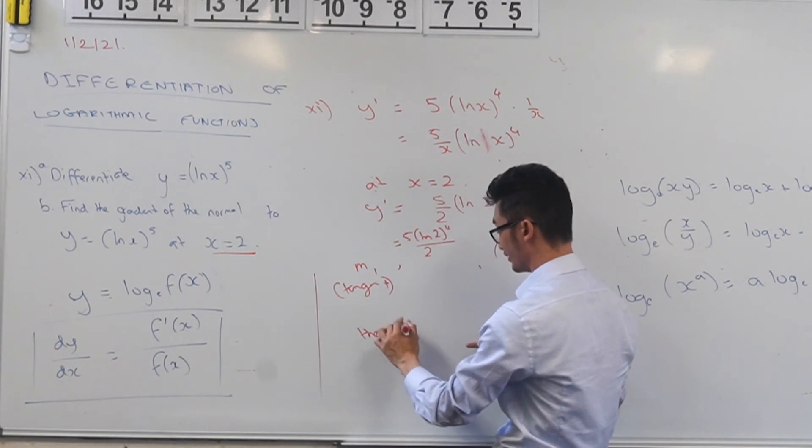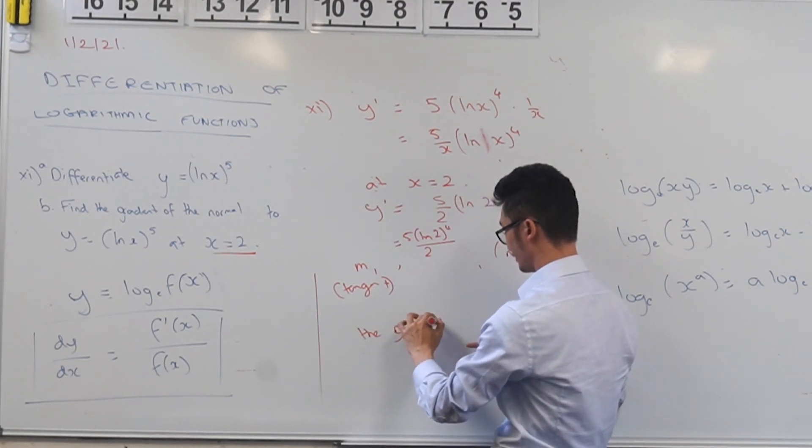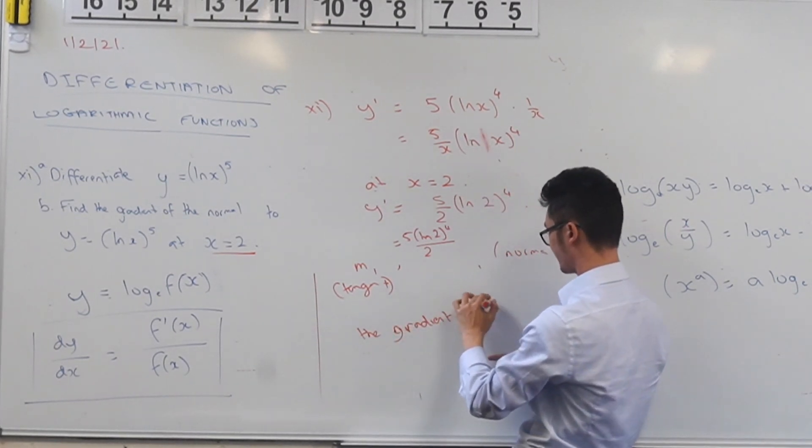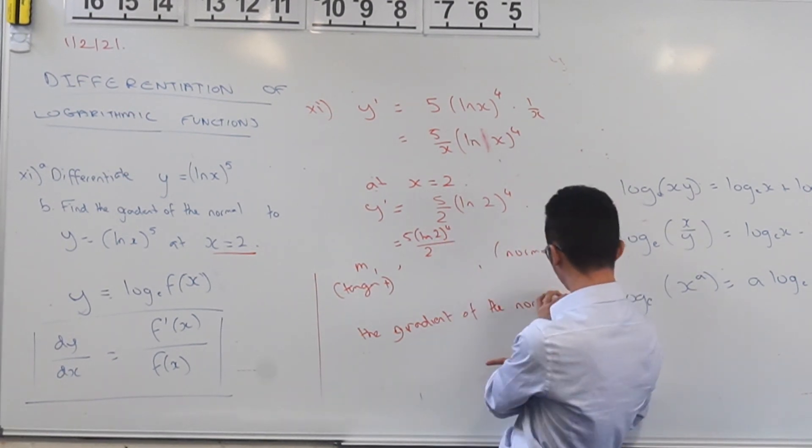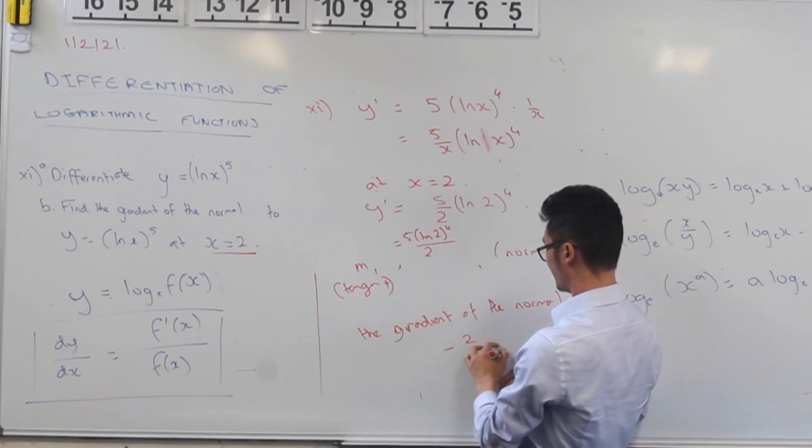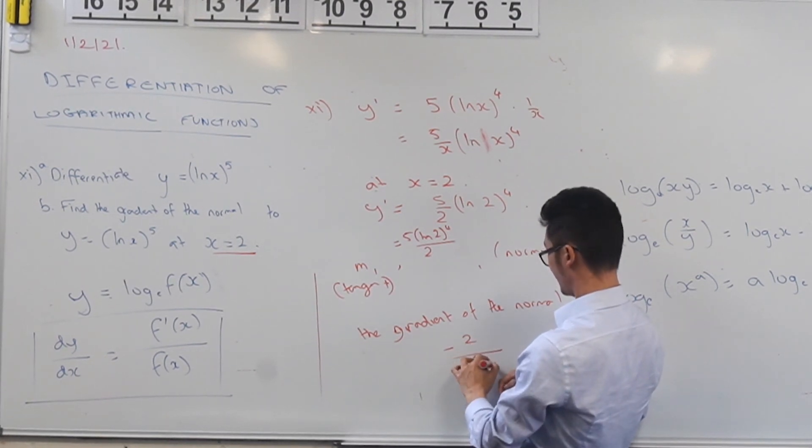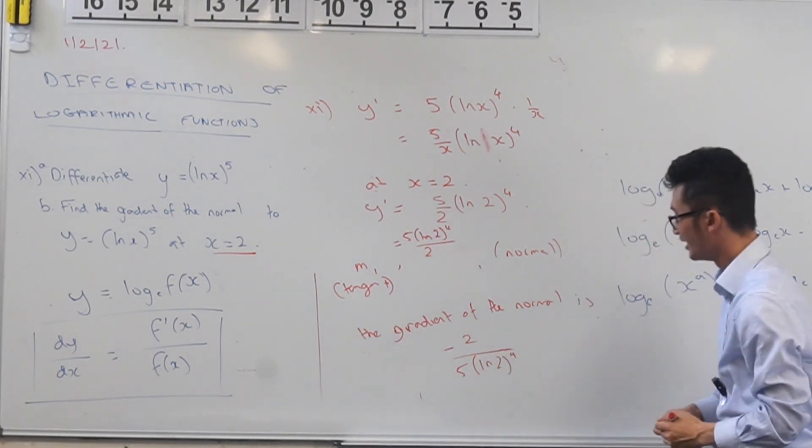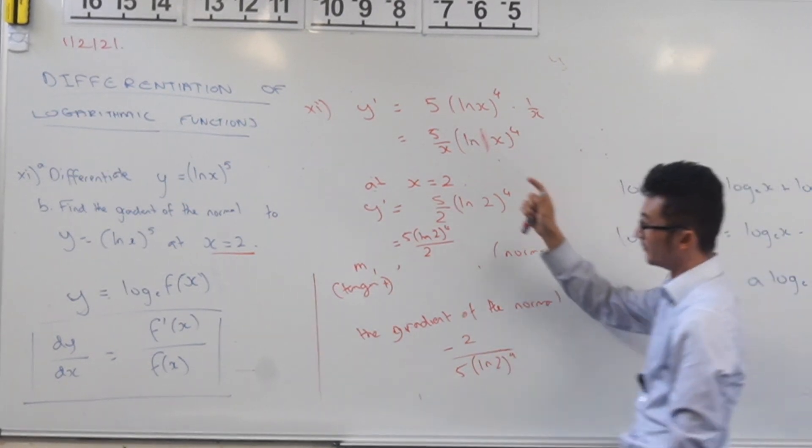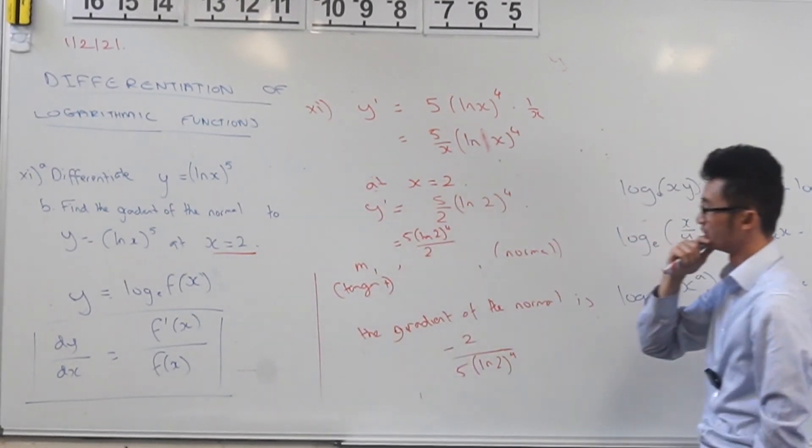And we really need to find the gradient of the normal here, I don't need to find the equation or anything. The gradient of the normal is the negative reciprocal of this, so that's going to be negative 2 over 5 ln 2 to the power of 4. Okay, so not the nicest kind of number there, but that's how we could find the gradient of the normal for this question at x equals 2.